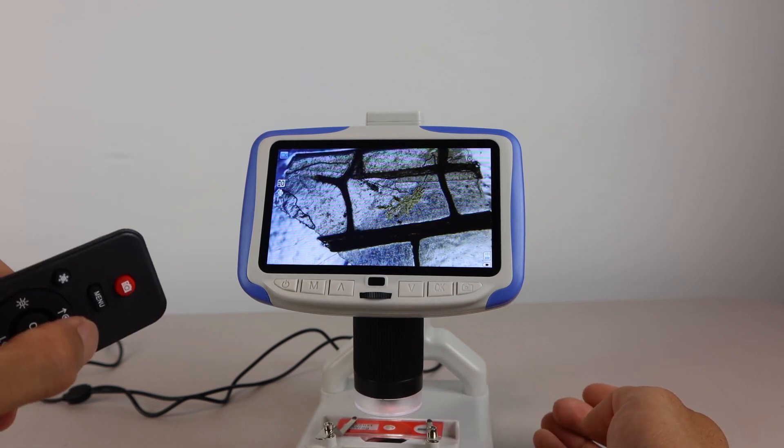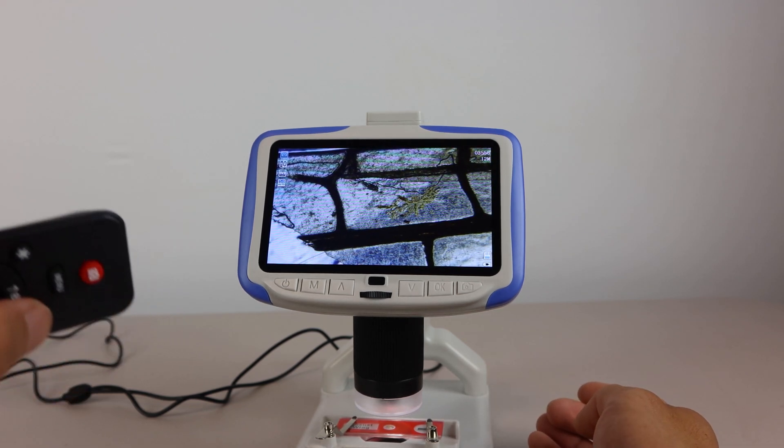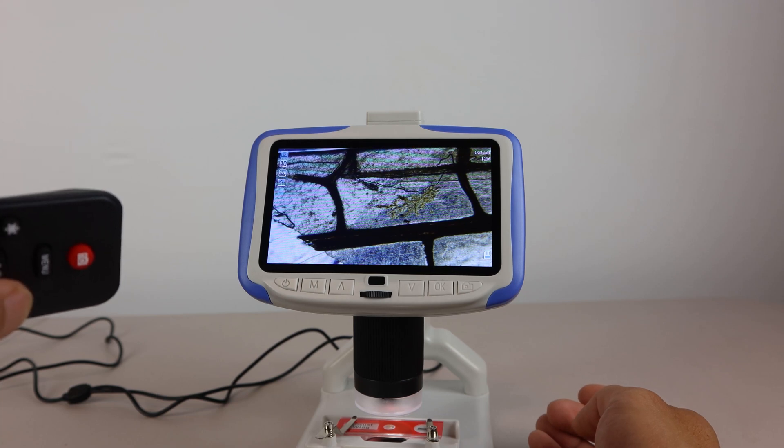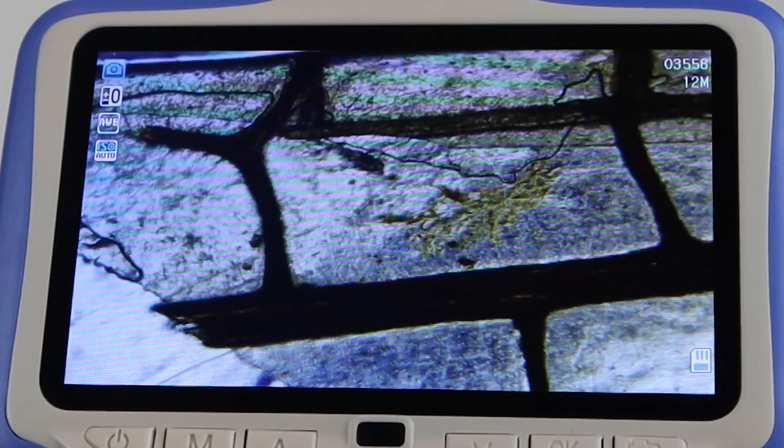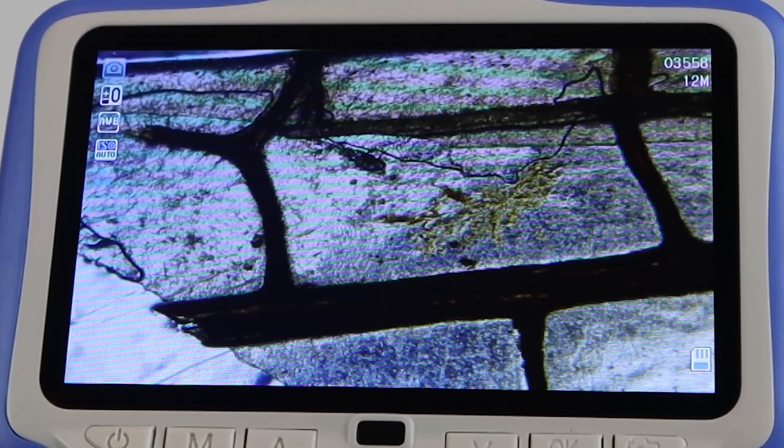When you change the mode to photo mode, the proportions are slightly different. But you can capture 12 megapixel still photos from the camera by pressing the OK button.